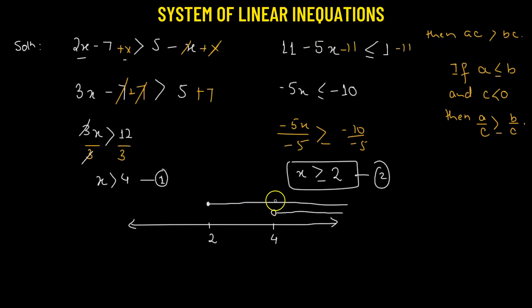Looking at this graph, we can see the common region where both solutions overlap. Our solution starts from 4 and goes to infinity. This is written as an open interval (4, ∞) because 4 is not included and infinity is unbounded by definition. This is the solution to our system of linear inequalities.